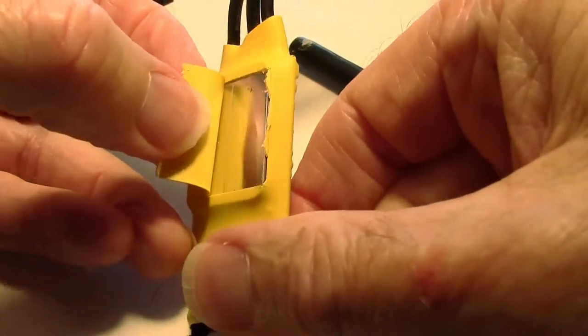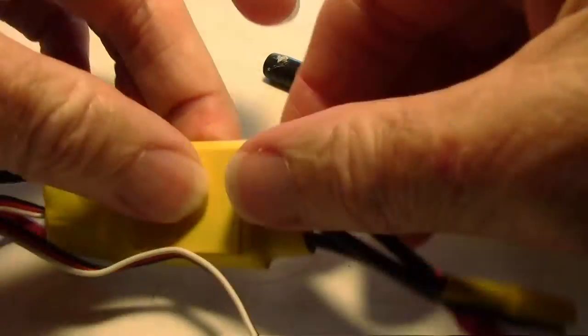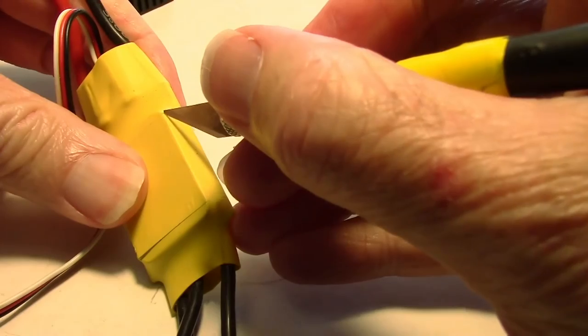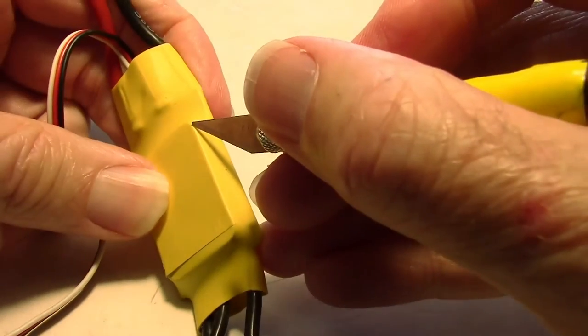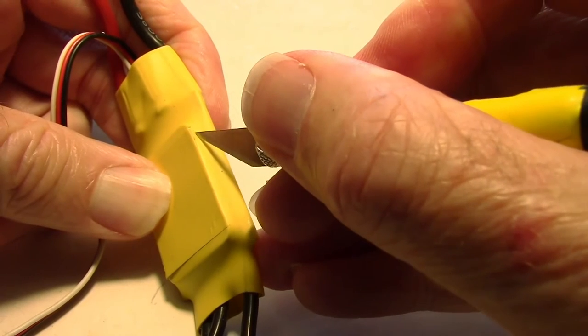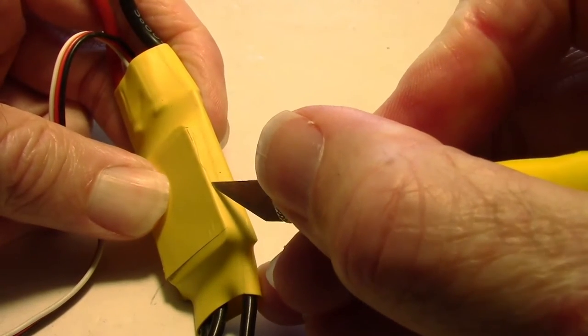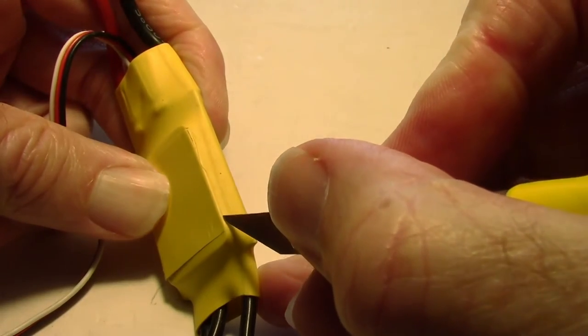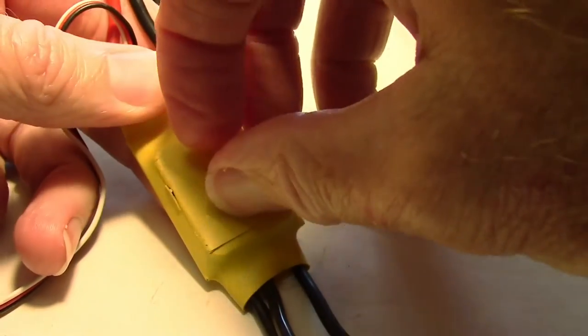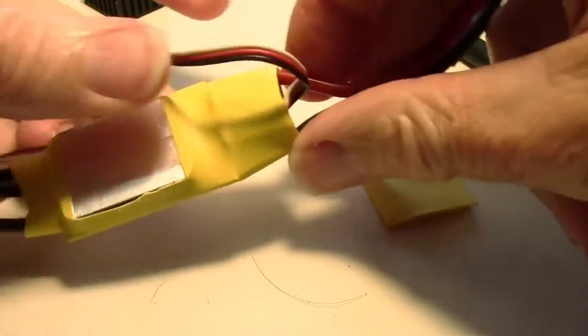And then we'll just do the same thing on the other side to get to the metal. So I'm leaving enough heat shrink on the ends so that the metal doesn't just fall off there. Because it's not really fastened on. I think it's usually just held on by the heat shrink. And we don't want it to move. So there it is right there.